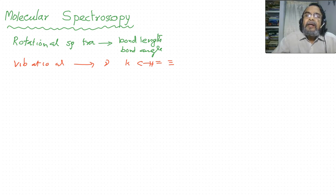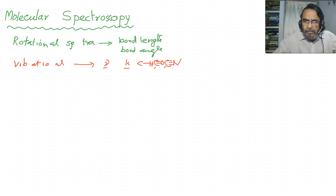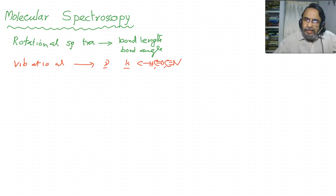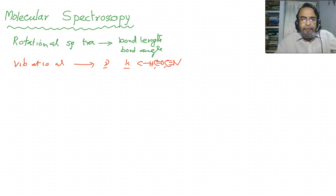Double bond means carbon-nitrogen, triple bond, etc. We can predict the nature of bonding by using vibrational spectra. What is force constant? Force constant is the restoring force per unit displacement. You can see in the diagram that a C-H single bond has a very low value for force constant compared with the double bond, and the triple bond has the maximum value. That is why it is very difficult to stretch a triple bond compared to a double bond and then a single bond. That's the vibrational spectra.